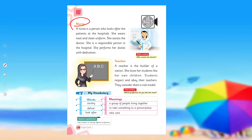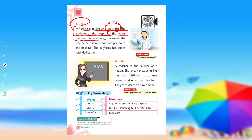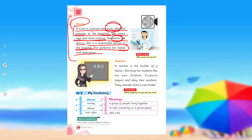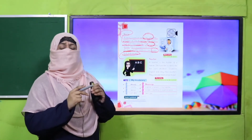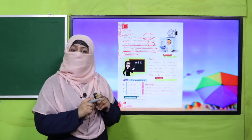The next profession is nurse. Usually we see female nurses, but male nurses also exist. A nurse is a person who looks after patients at a hospital — jo hospital mein mareezon ka khayal rakhti hai, unki dekh bhal karti hai. She wears a neat and clean uniform. She assists the doctor and is their helper. She is a responsible person in the hospital and performs her duties with dedication — meaning doing work with great care and full energy.